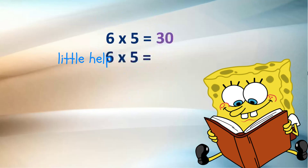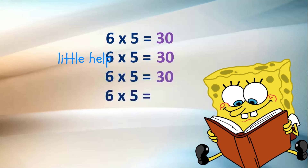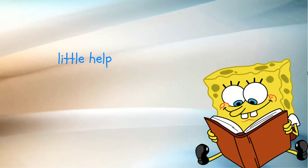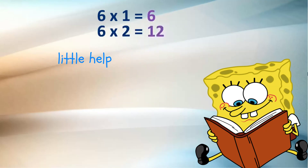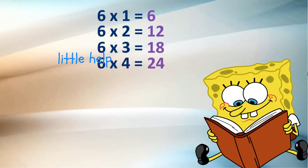6 fives are 30. 6 fives are 30. 6 fives are 30. 6 ones are 6, 6 twos are 12, 6 threes are 18, 6 fours are 24, 6 fives are 30.